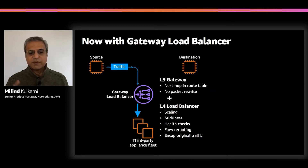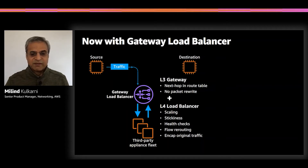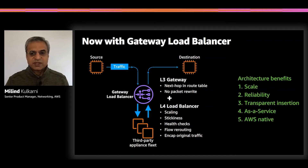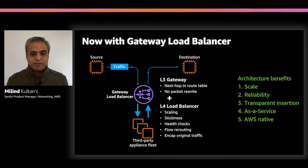There is no change in source IP, no change in port numbers. The appliance is completely able to see the traffic as-is. The appliance can then decapsulate, see the traffic, inspect it, and send it back to its destination. Because of these Gateway Load Balancer characteristics, it provides horizontal scale, reliability, and transparent insertion of services to the appliances.